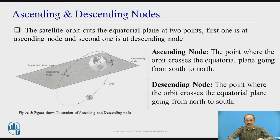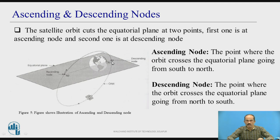In this slide, we shall see ascending and descending nodes. The satellite orbit cuts the equatorial plane at two points: the ascending node and the descending node. The ascending node is the point where the orbit crosses the equatorial plane going from south to north. The descending node is the point where the orbit crosses the equatorial plane going from north to south.